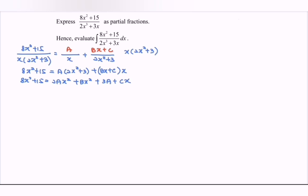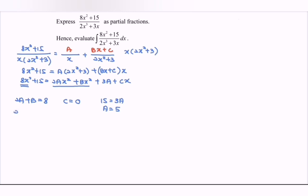Now we compare coefficients. For x²: 2a plus b equals 8. For x: c equals 0. For the constant: 3a equals 15, so a equals 5. Substituting a equals 5: 2 times 5 plus b equals 8, so b equals negative 2.